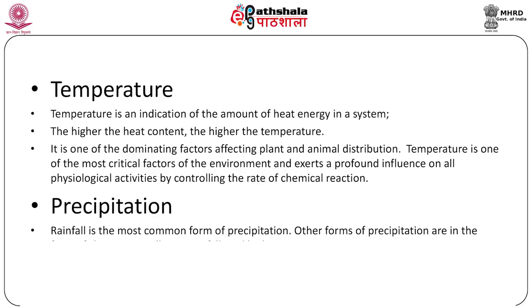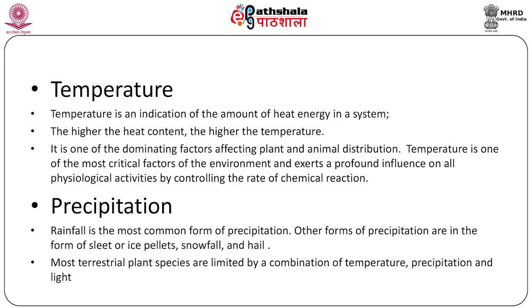Precipitation: rainfall is the most common form of precipitation. Other forms of precipitation are sleet or ice pellets, snowfall, and hail. The amount and regularity of rainfall vary with location and climate types and affect the dominance of certain types of vegetation as well as crop growth and yield. Most terrestrial plant species are limited by a combination of temperature, precipitation, and light.